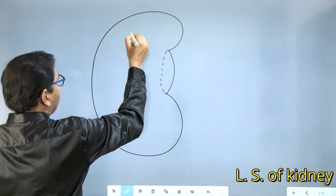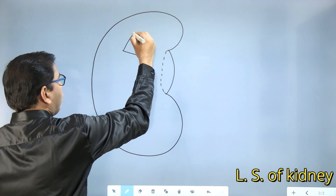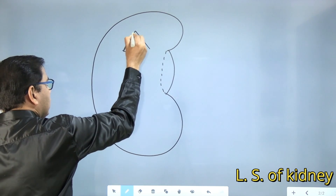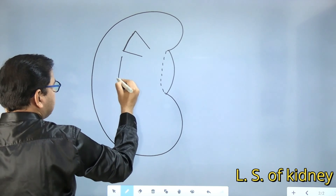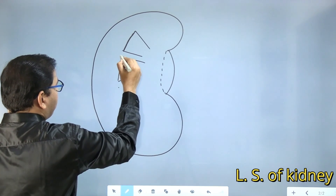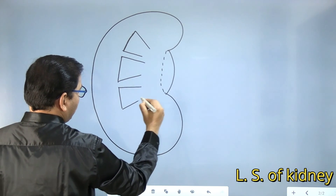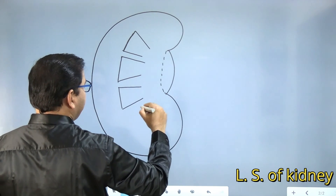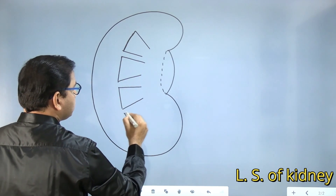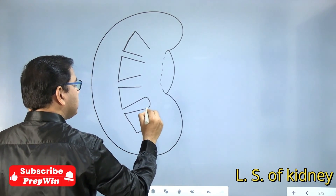Now we are going to draw a pyramid — watch carefully. We have to draw a triangular structure. Follow this line, now follow this line — here is the second triangular structure. It is called a pyramid. Follow this line. Don't close the triangle; keep some space between them. Again, follow this line — somewhat here and here.